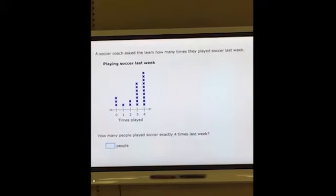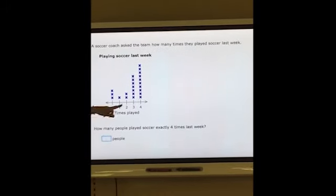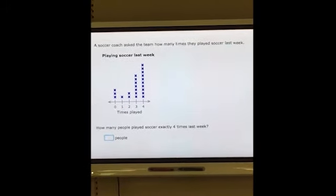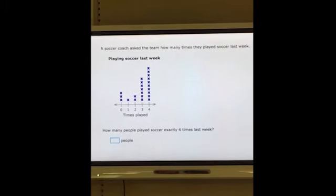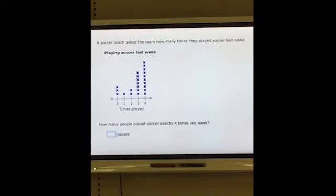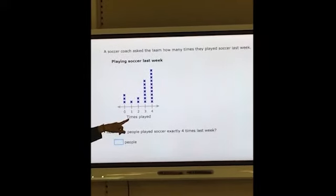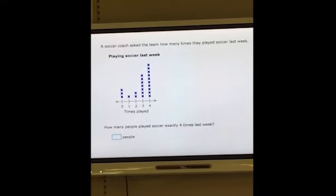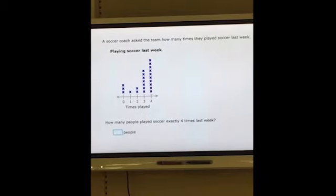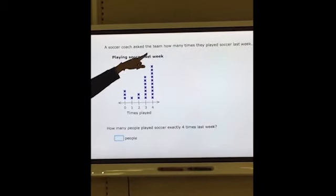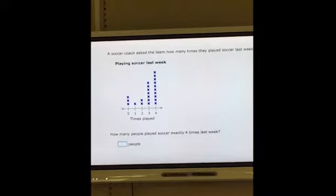This one's titled, Playing Soccer Last Week. The numbers again are 0, this time through 4. It says a soccer coach asked the team how many times they played soccer last week. The numbers on the line plot say times played. That's how many times they played. And again, those X's would represent the members of the team, the individual players.